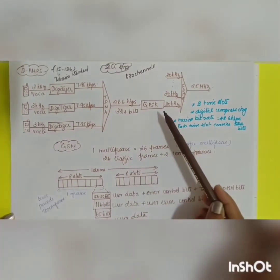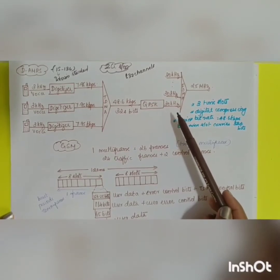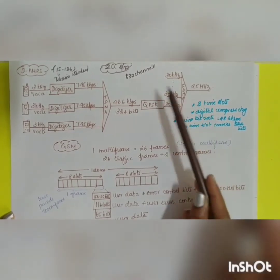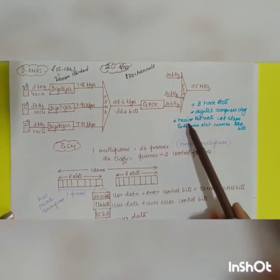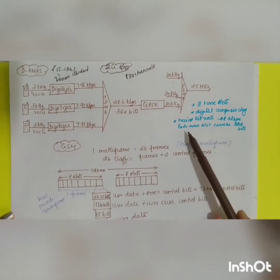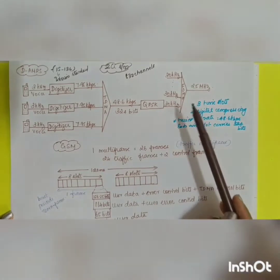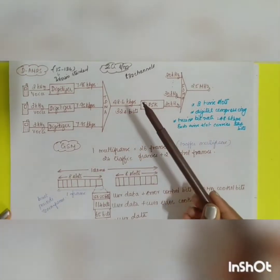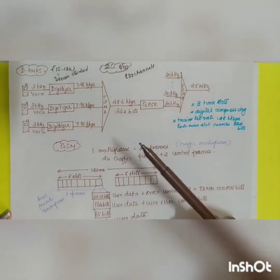One main feature of D-AMPS is dividing the 30 kHz channel pair into three time slots and digitally compressing the voice data, yielding three times the call capacity. Each time slot has a transmission bit rate of 48.6 kbps and carries 324 bits. These are the important points of the Digital AMPS system.